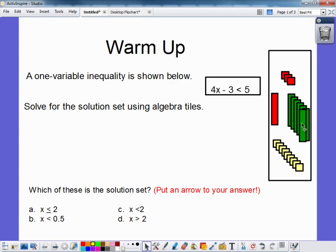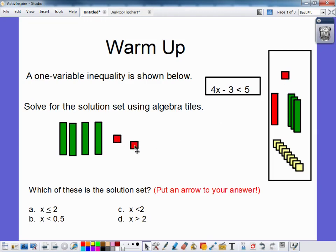Since I have 4x, I'm going to take four x's: 2, 3, 4. And then I have minus 3. So I'm going to go 1, 2, 3, less than 5 positives. So I'm going to put 5 positives up here.